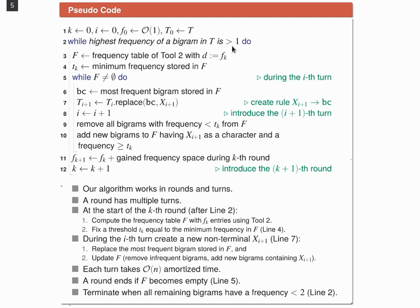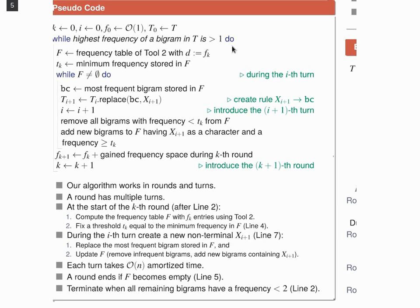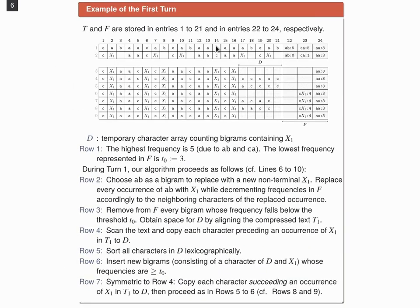To understand how a turn works in detail, let's have a look at the following example, where t is given by the positions 1 to 21 and the frequency table f in the following positions, comprising three bigrams, where a b and c a are the bigrams with the highest frequency 5 and a a the bigram with the lowest frequency 3. Consequently, three is our threshold in the following.